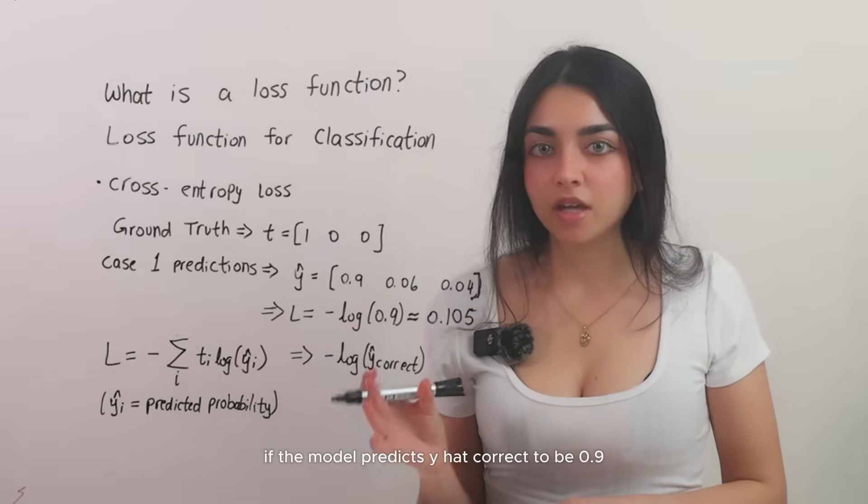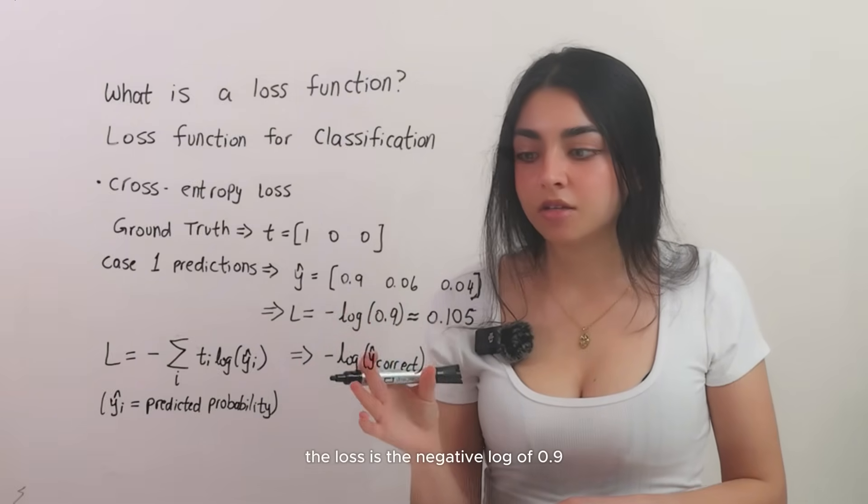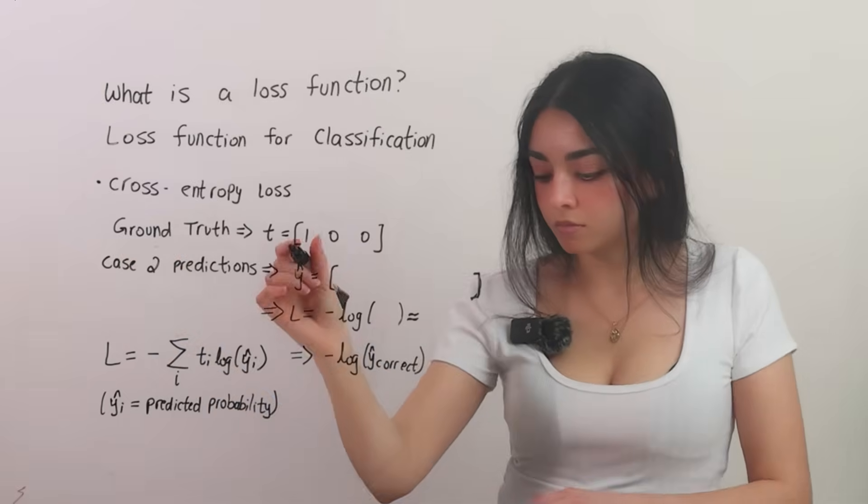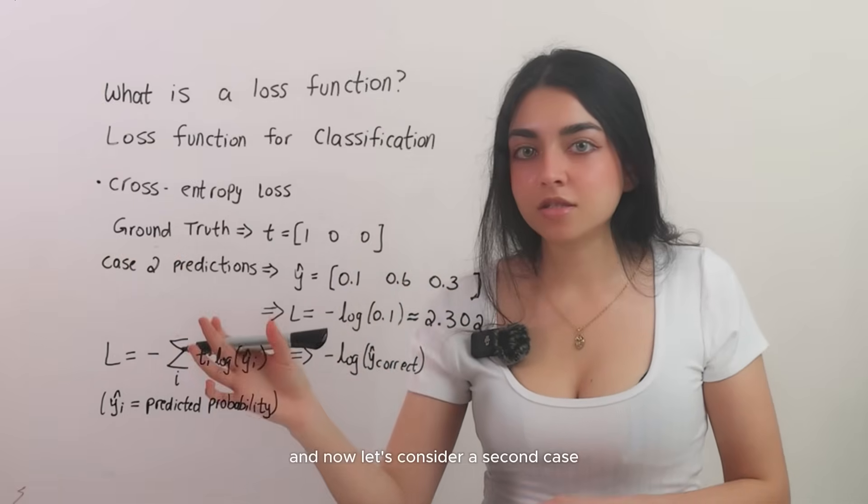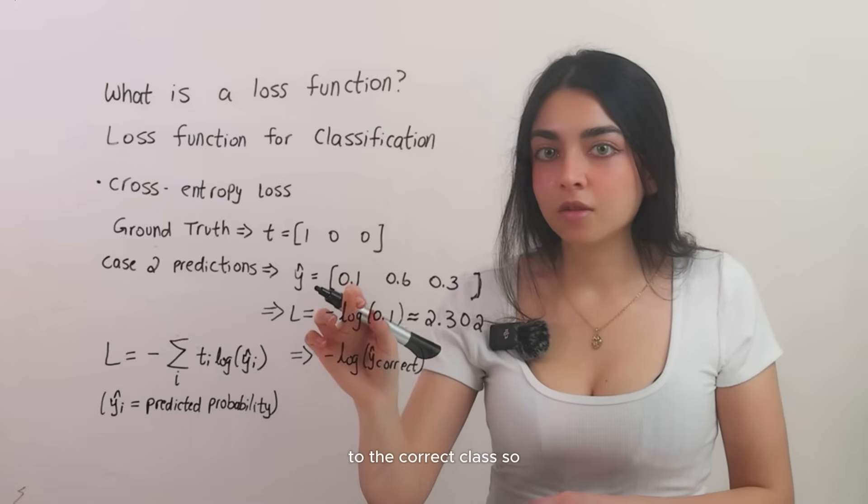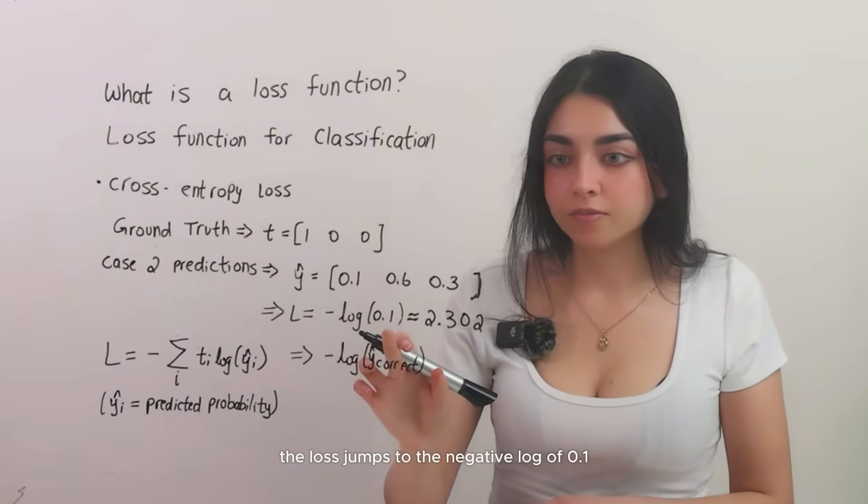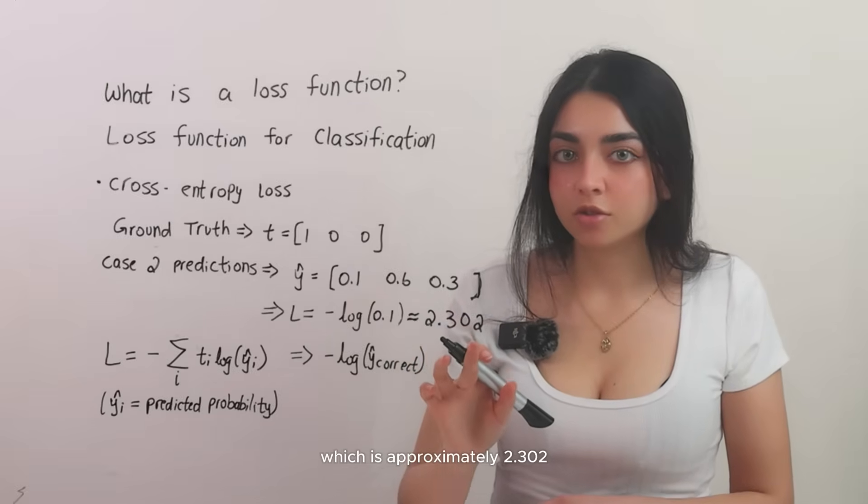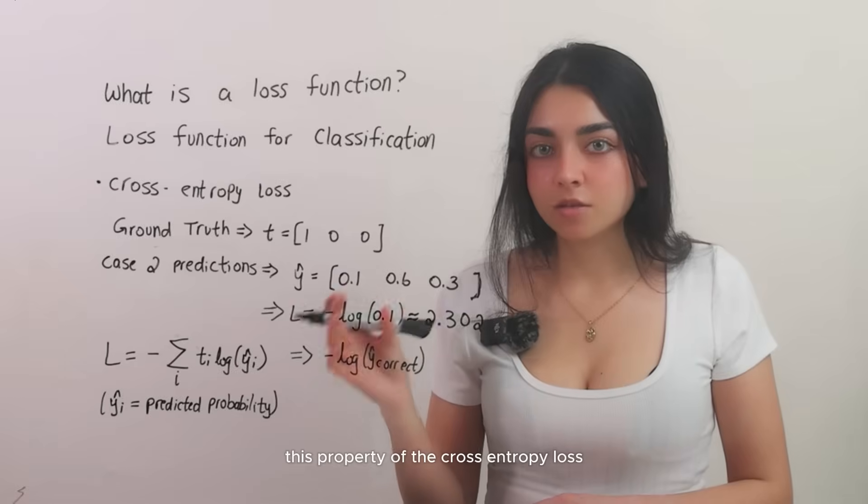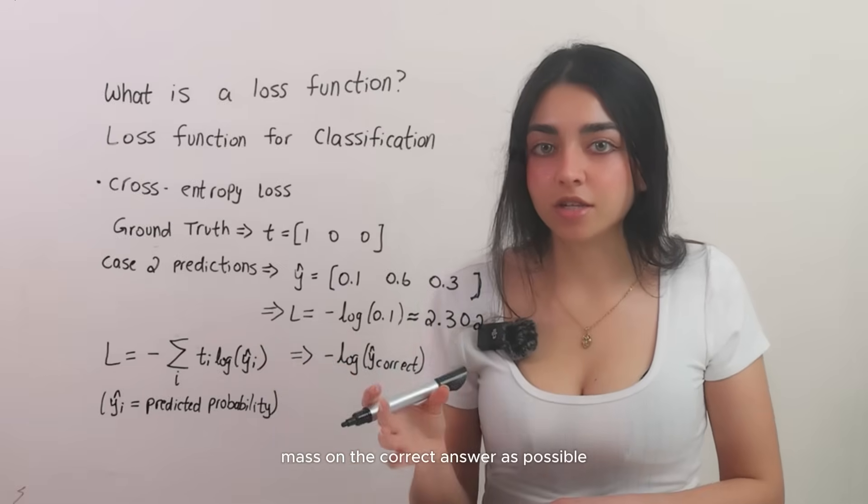So what does that mean? If the model predicts y hat correct to be 0.9 or 90 percent probability for the right class, the loss is the negative log of 0.9 which is a small number approximately 0.105. And now let's consider a second case if the model assigns a very low probability to the correct class, so y hat correct to be 0.1. The loss jumps to the negative log of 0.1 which is approximately 2.302 which is much higher. Thus the model is severely penalized for confidently wrong predictions.